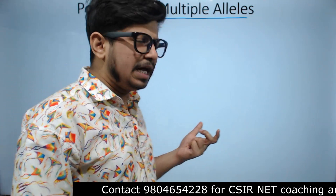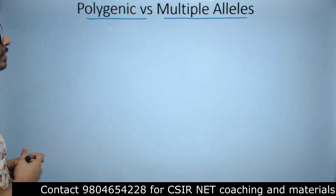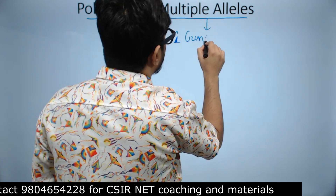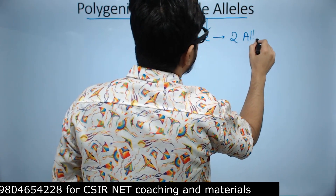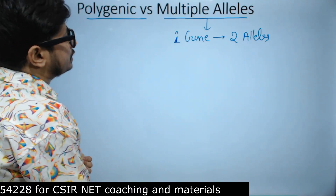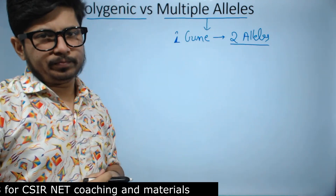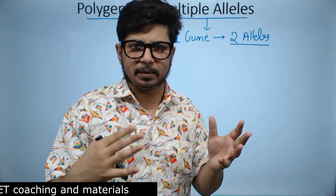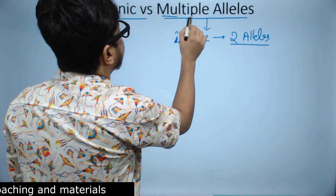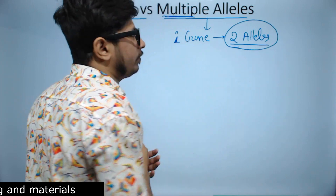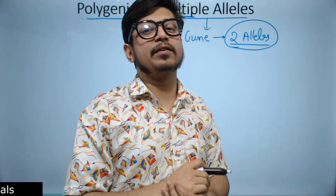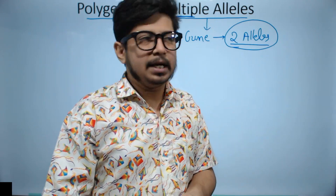This is always a big question for students from plus two standard to college level — what is the fundamental difference between the two? For one gene, in very simple terms, we have two alleles. Multiple alleles does not just mean two alleles; the term 'multiple' is only utilized when there are more than two alleles involved in the process.